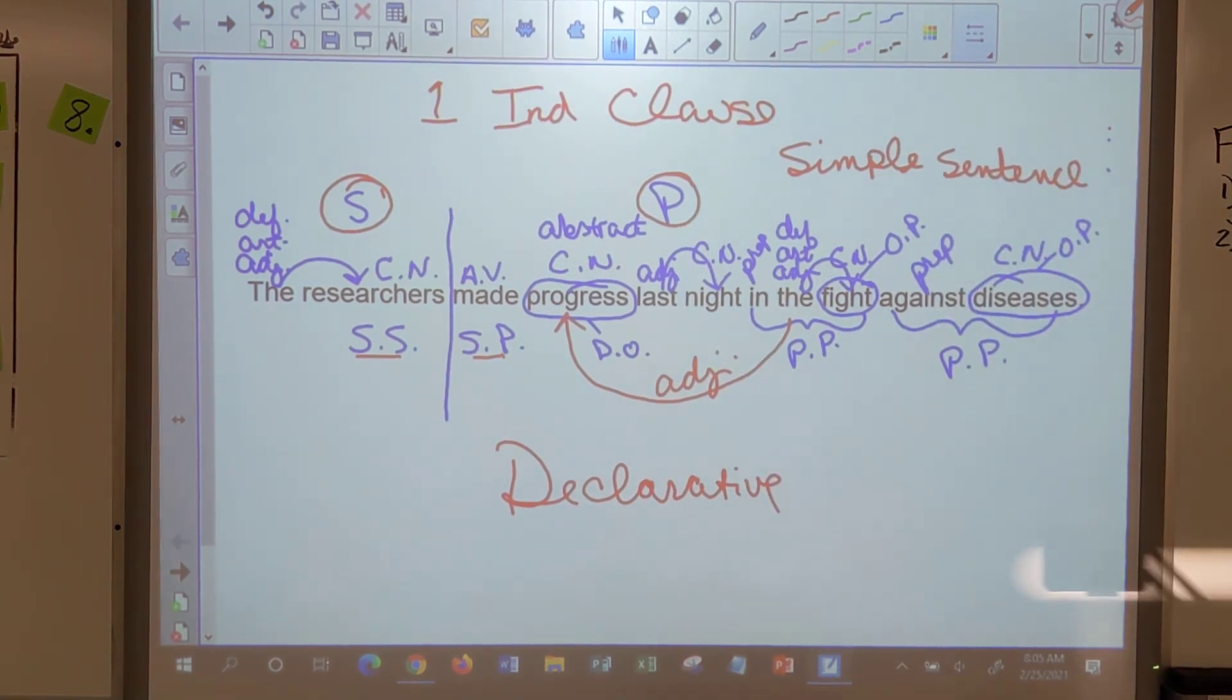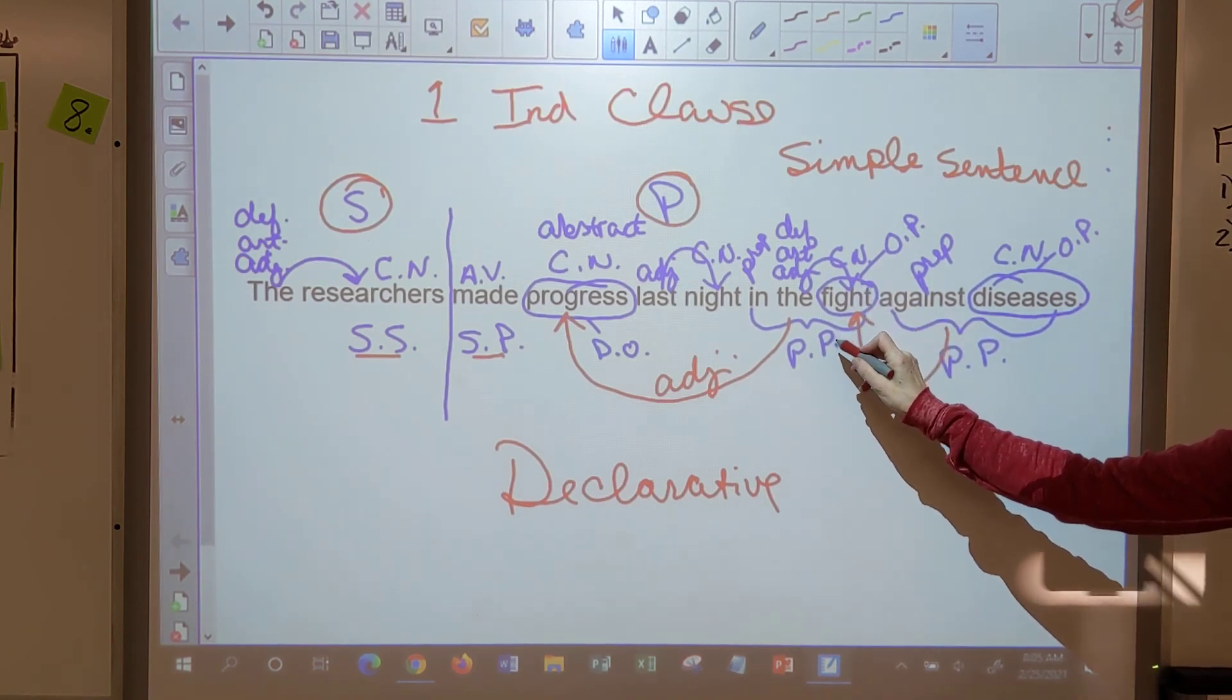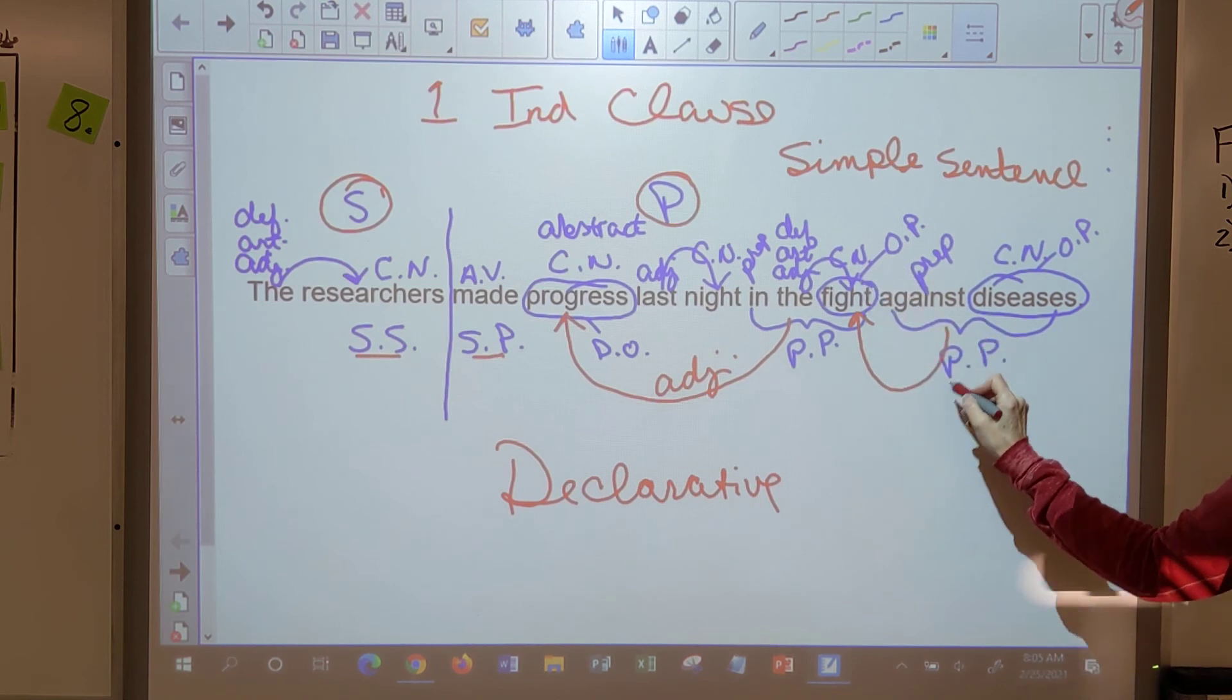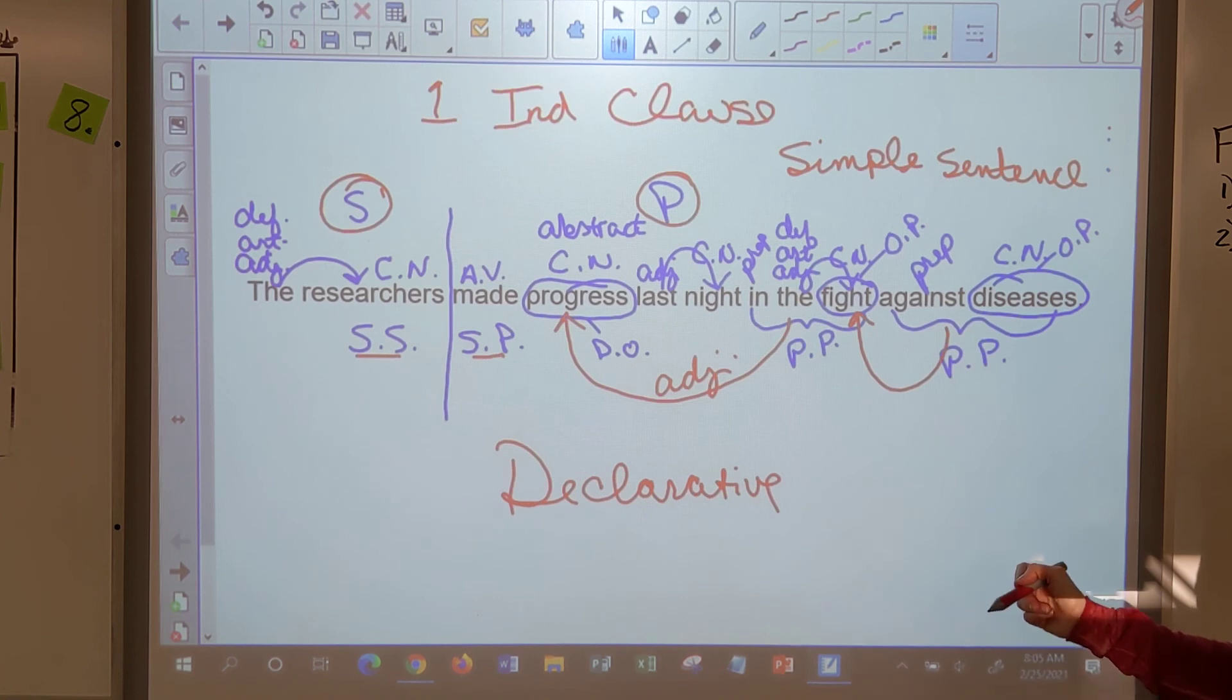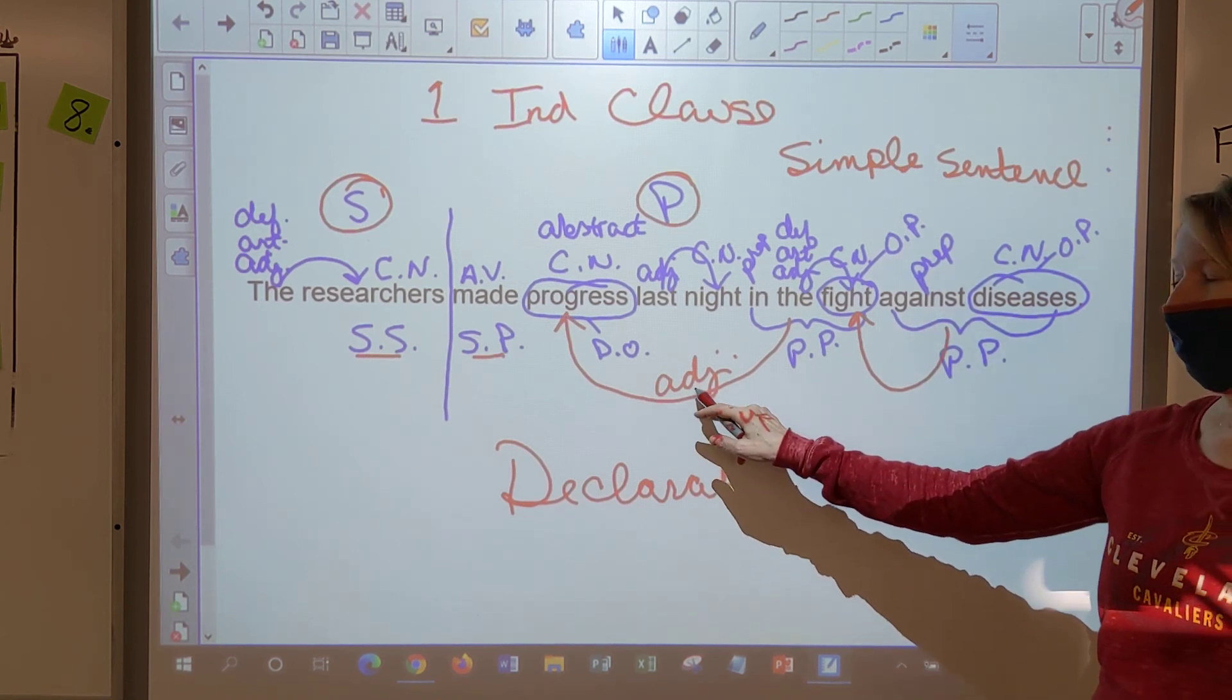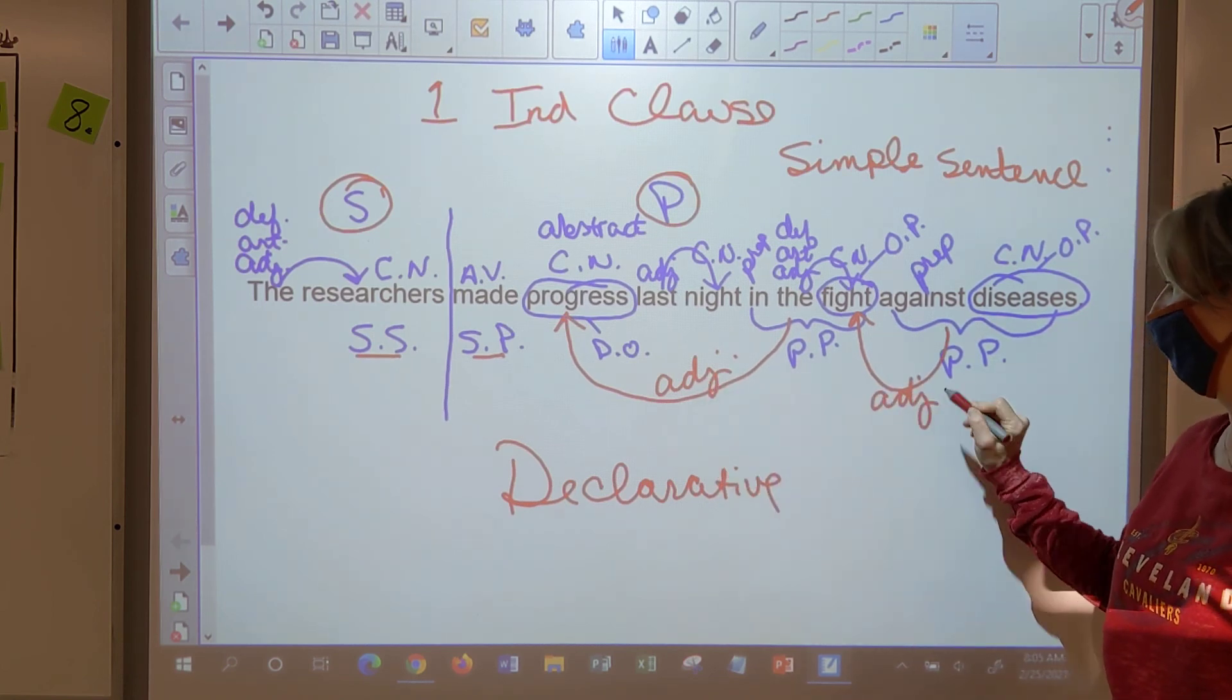Alright, Cale, what about the other one? What's it talking about? What's against disease it's talking about? What the researchers made progress in. Or what they're fighting. There you go. Except that fighting isn't the word. It's describing the fight. Fight is a noun, so what part of speech is this phrase acting as? What describes a noun? It's an adjective. Adjectives describe nouns, right?